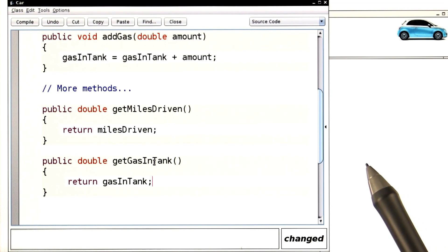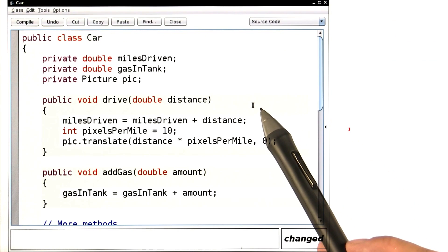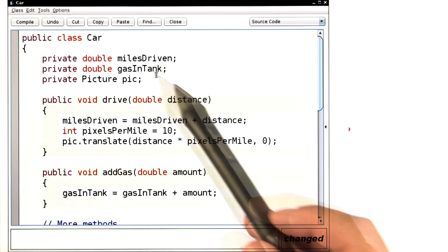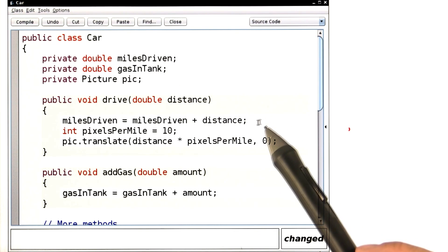Now we're almost done with implementing the car class, but if you have another look at the drive method, remember that we didn't update the gas in tank variable. That computation is a little bit trickier. Let's first figure it out on a sheet of paper.